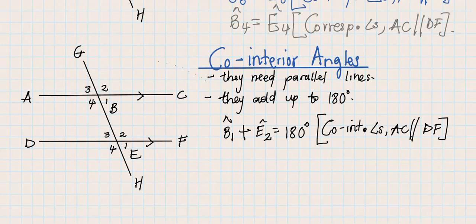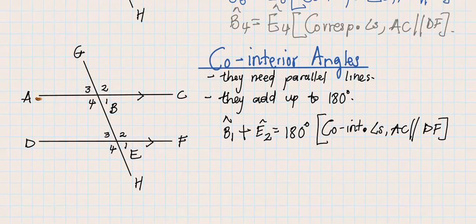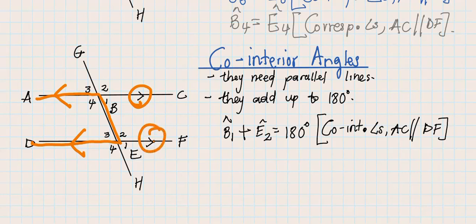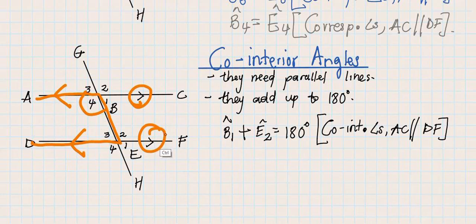Now, what's the next pair of co-interior angles? Please pause the video and see if you can find it, write it down with the reason. We have this C-formation facing the other way, and I know these lines are parallel because it was given to me. Therefore B4 and E3 are co-interior angles, which means they add up to 180 degrees.